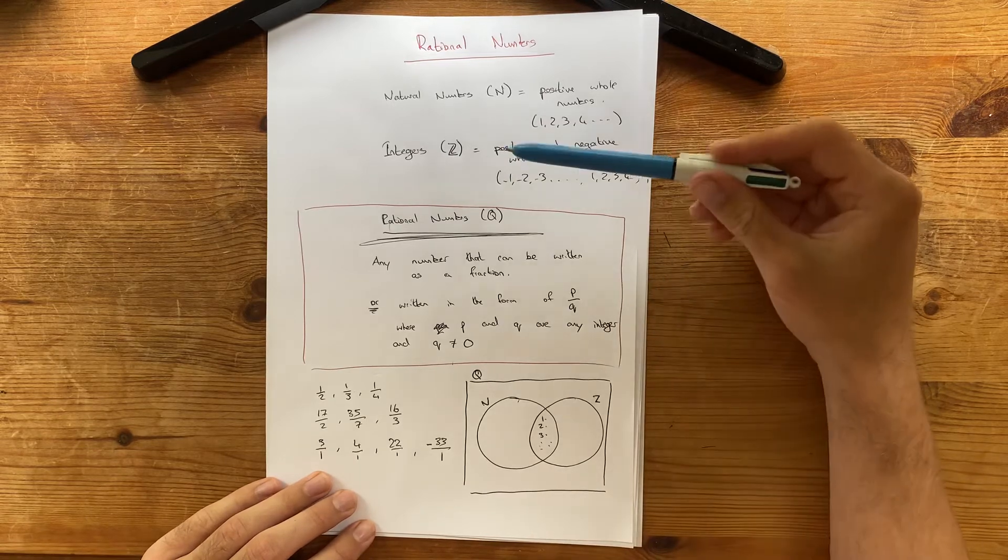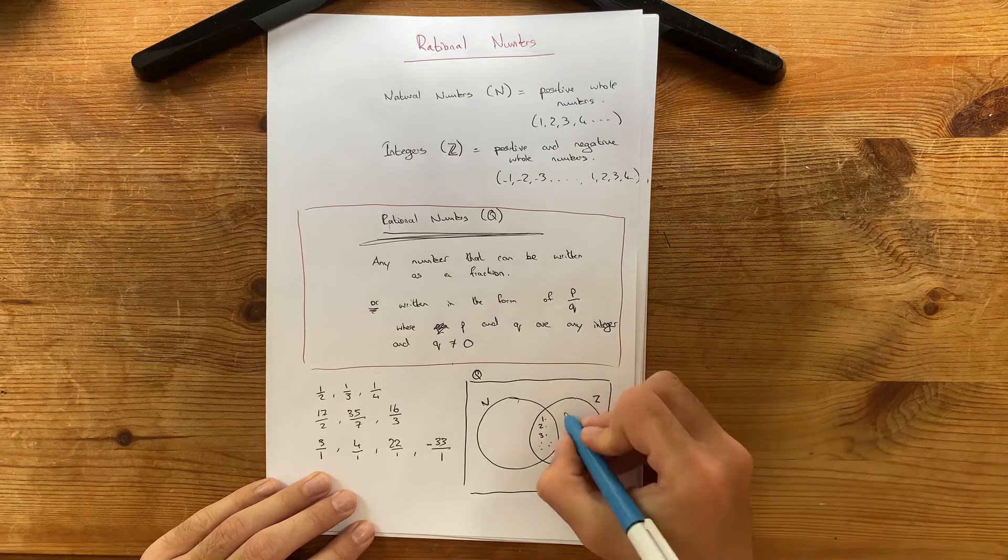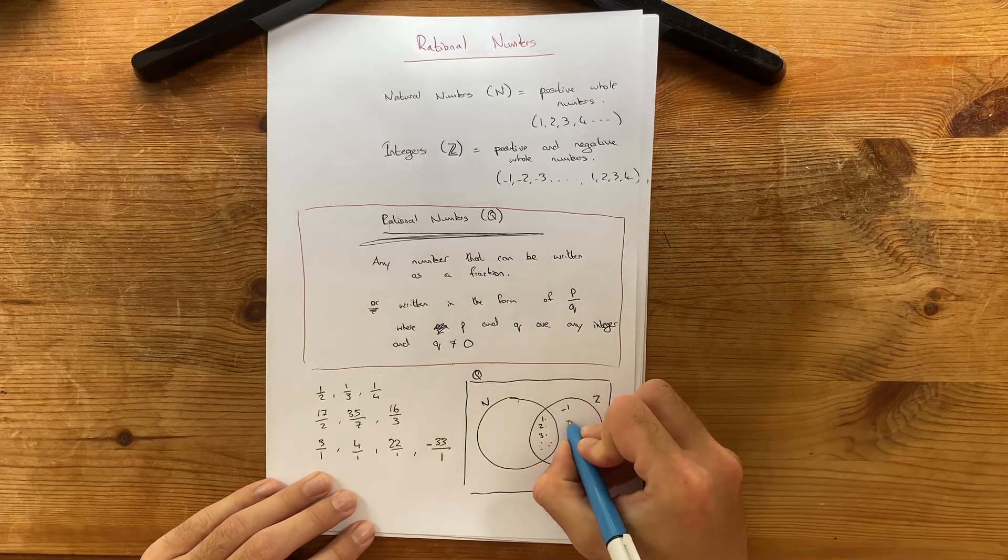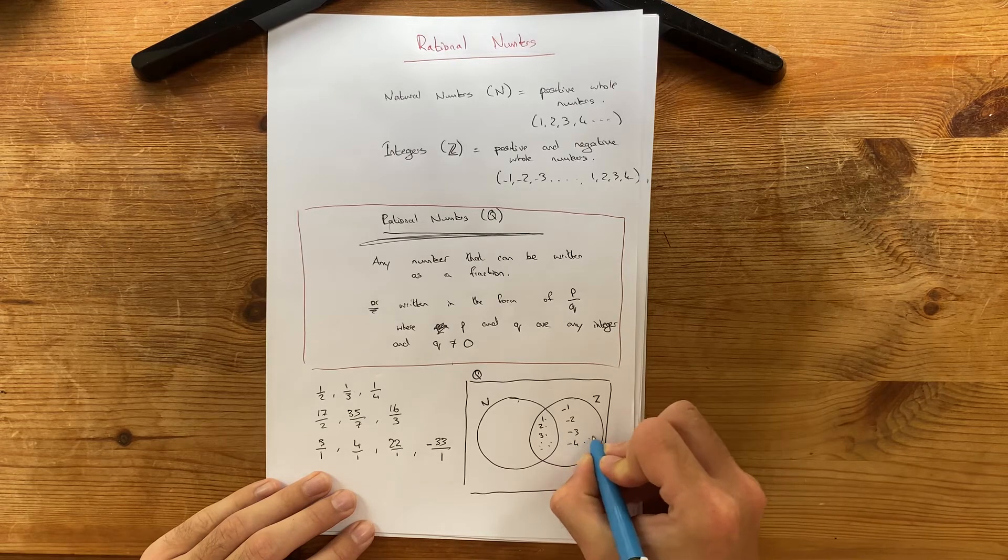And then we've got, in the integer section, we've got the minuses. So, minus 1, minus 2, minus 3, minus 4, and so on.